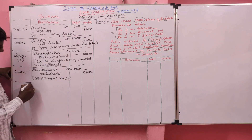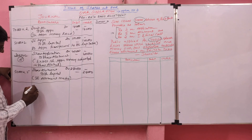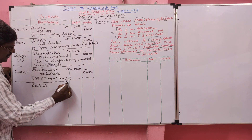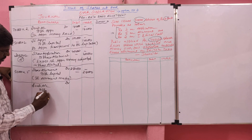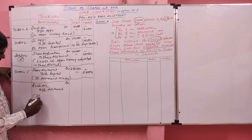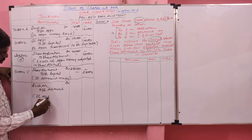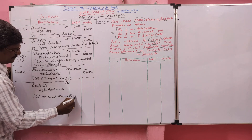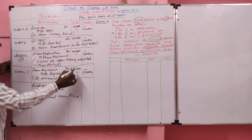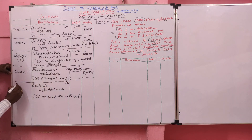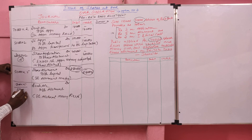Next, we are going to receive cash. Entry: Bank Account Dr to Share Allotment. We are going to receive share allotment money. Narration: Share allotment money received. We supposed to collect Rs. 2,50,000 — that is 50,000 × 5.